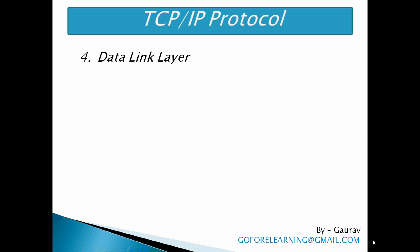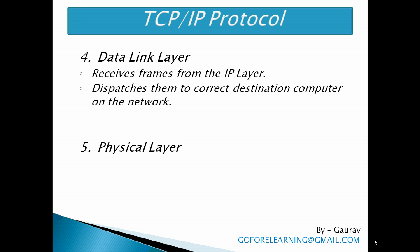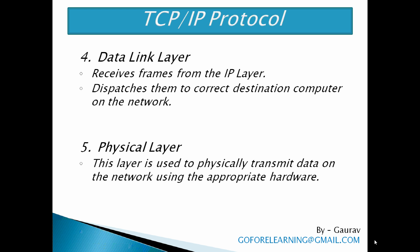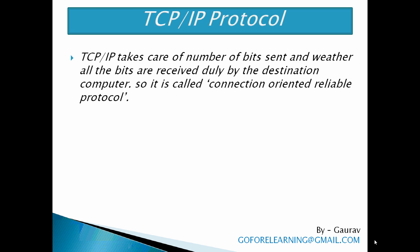Next is the Data Link layer. The Data Link layer receives frames from the IP layer and dispatches them to the correct destination computer on the network. Next is the Physical layer. This last layer is used to physically transmit data on the network using the appropriate hardware. TCP/IP takes care of the number of bits sent and whether all the bits are received properly by the destination computer. So it is called a connection-oriented reliable protocol.